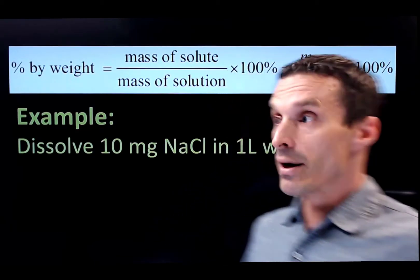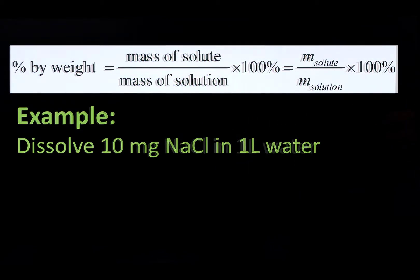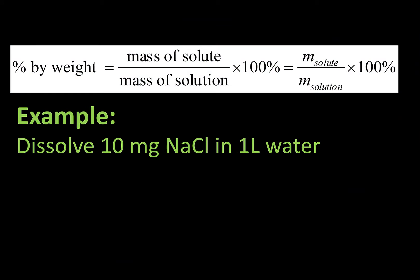So I could say nanograms per mL, that would still be parts per billion. All right, so let's work out an example here of how we could calculate concentrations expressed in parts per million. So we've got 10 milligrams of salt, sodium chloride. We'll dissolve that in one liter of water.